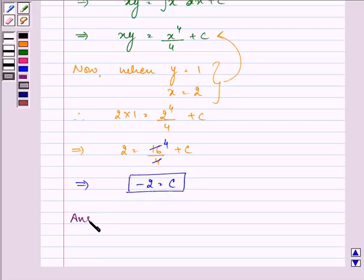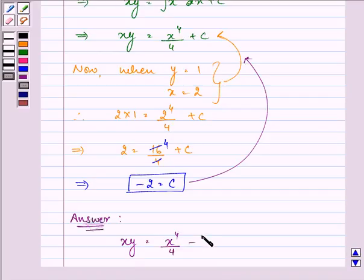So the required answer to this question is what we need to do is substitute the value of c as minus 2 in here and we have it as xy equal to x raised to the power 4 upon 4 minus 2 as the required solution of the given differential equation. Hope you understood it well and enjoyed it too. Have a nice day ahead.